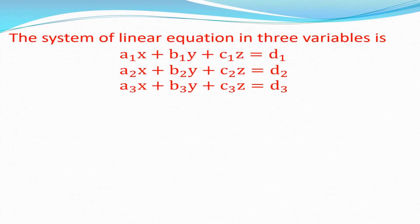Let the general system of linear equations in three variables be a1 into x plus b1 into y plus c1 into z is equal to d1. A2 into x plus b2 into y plus c2 into z is equal to d2.